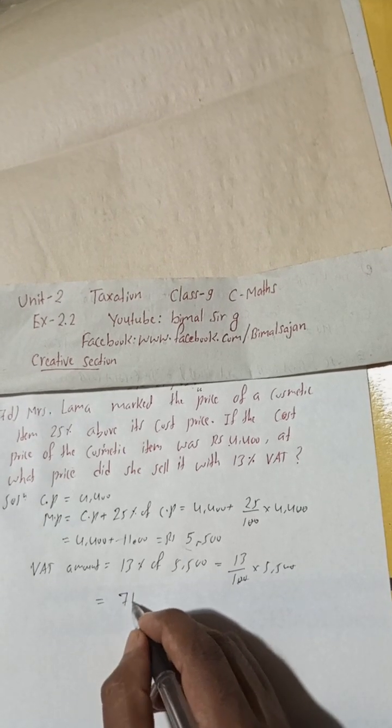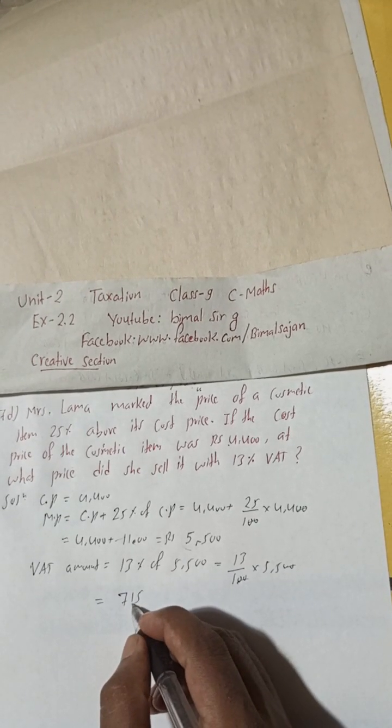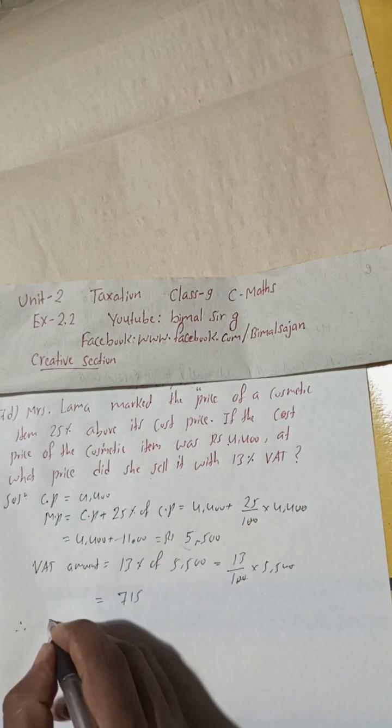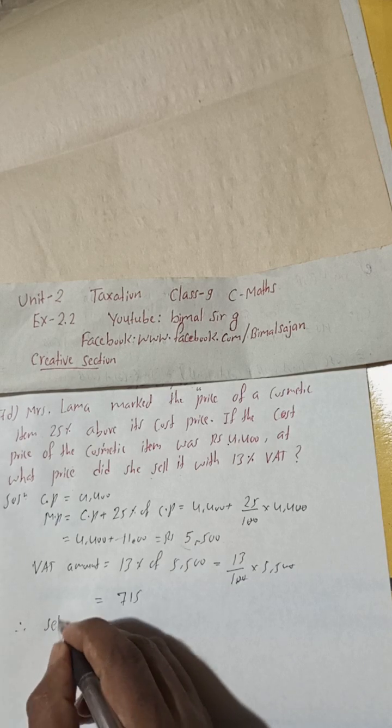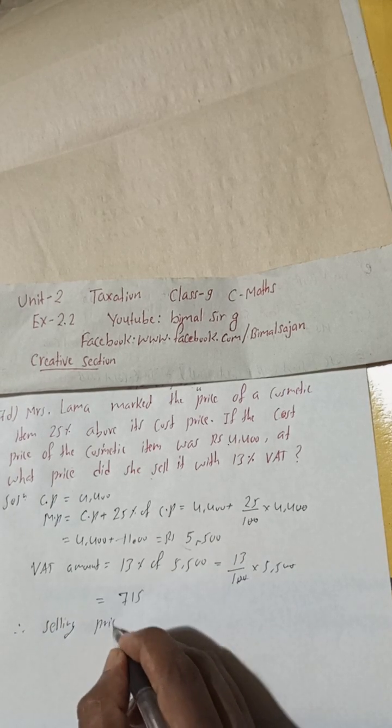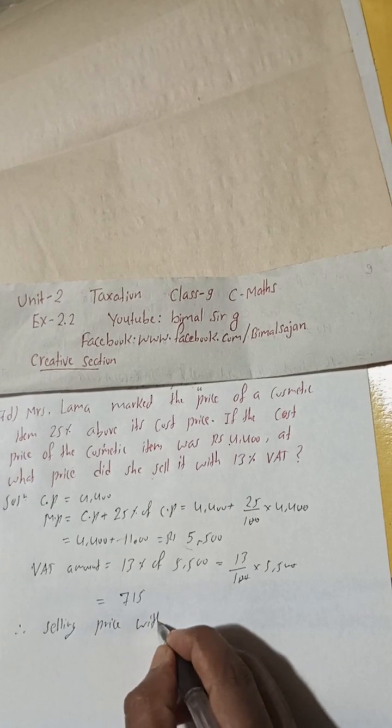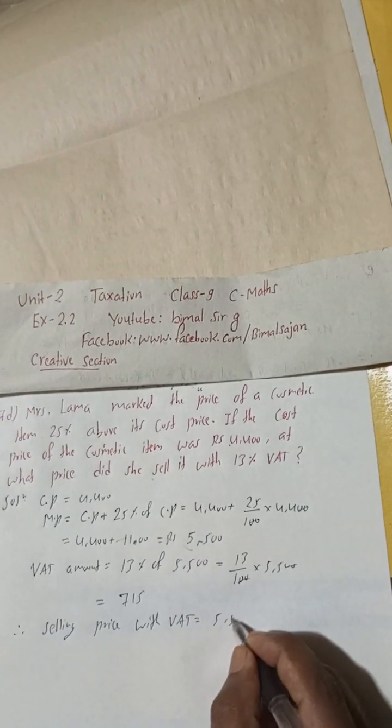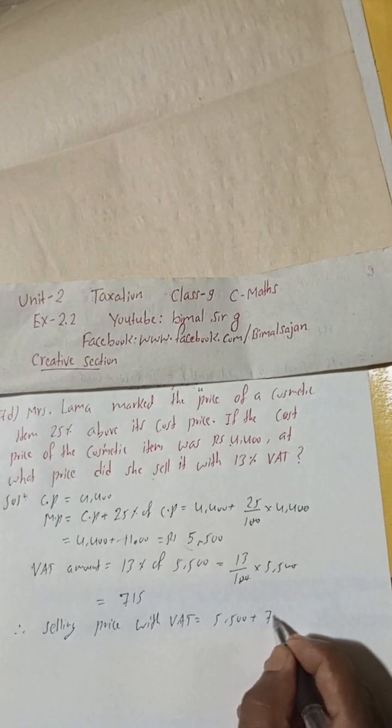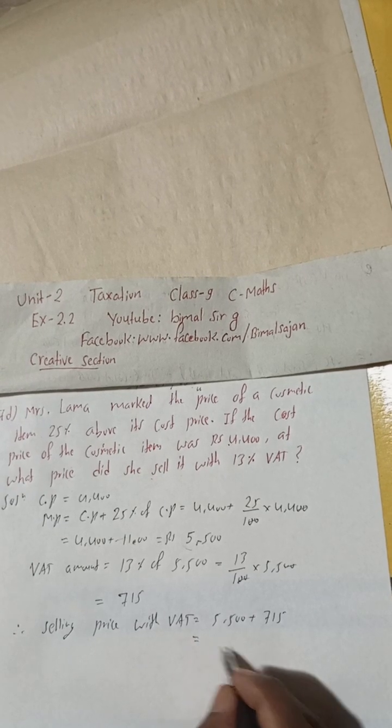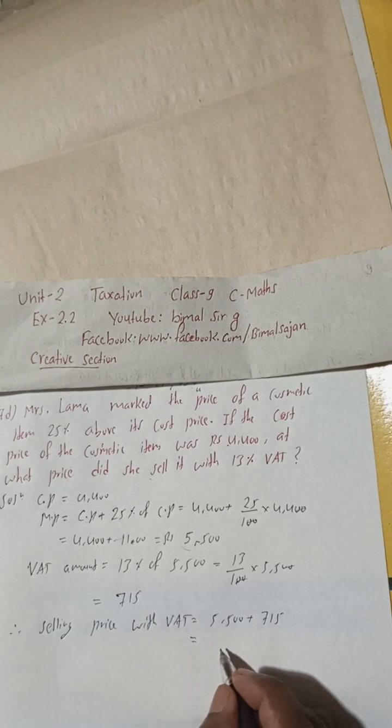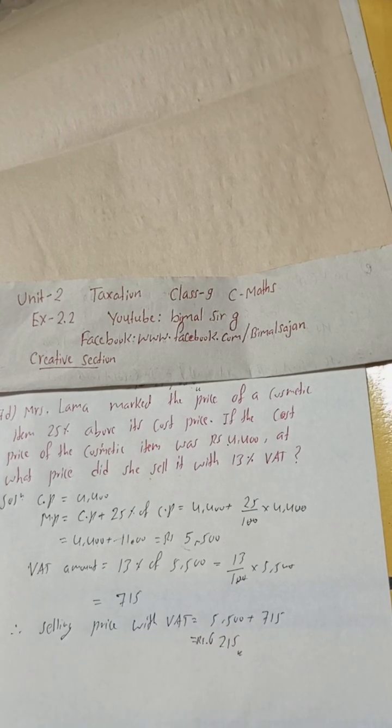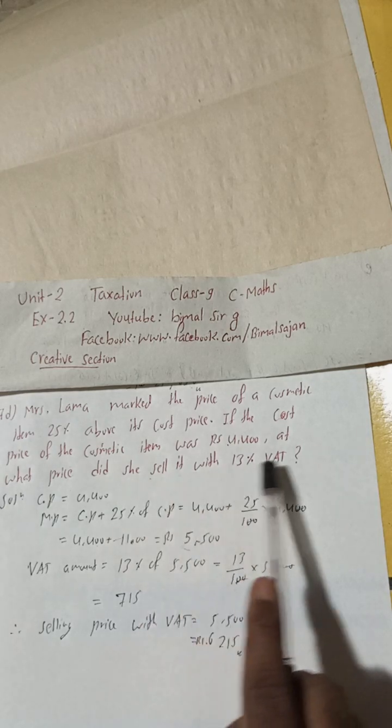Now we can find what price did she sell it with. Therefore, selling price with VAT will be how much? 5500 plus 715. So this is equal to 6215. So at what price did she sell? She sells at the price of 6215 with 13 percent VAT.